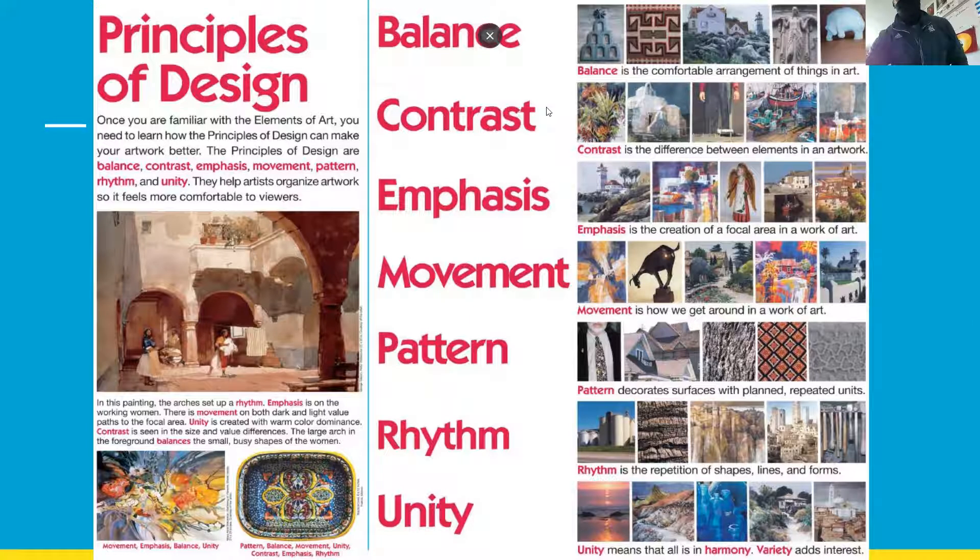And remember, the vanishing point doesn't have to be in the center of the art piece. It can be off to an angle or off to the side. We've already been over backgrounds. Remember, physical texture is anything that you can physically touch. Implied texture is anything on a piece of paper. Here's a value scale. And here are examples of implied texture.